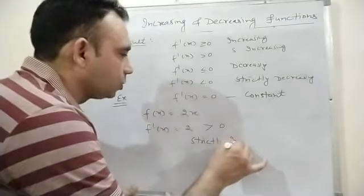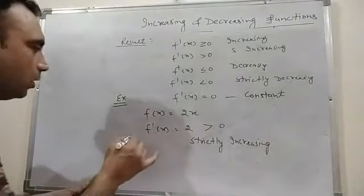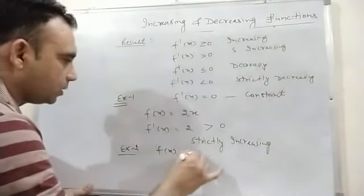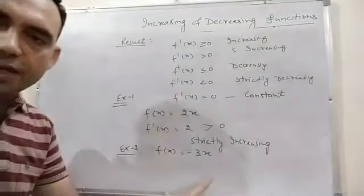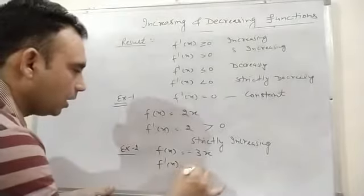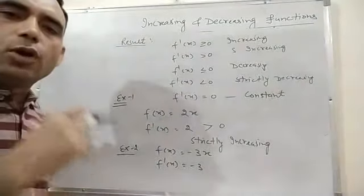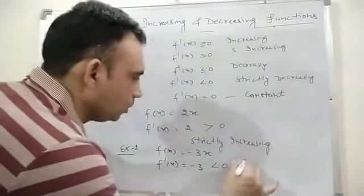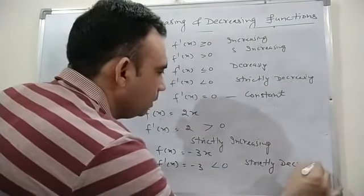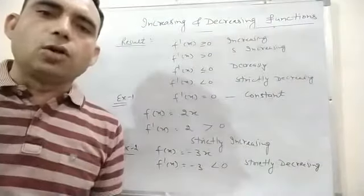The function is strictly increasing in all its domain. Similarly, we take the second example: f(x) = -3x. We find f'(x) by differentiation. f'(x) = -3, always less than 0, and does not depend on x. So this function is strictly decreasing. Now we will use differentiation to find whether a function is increasing or decreasing.